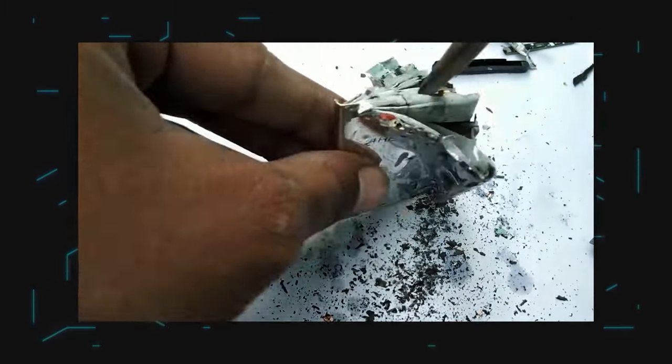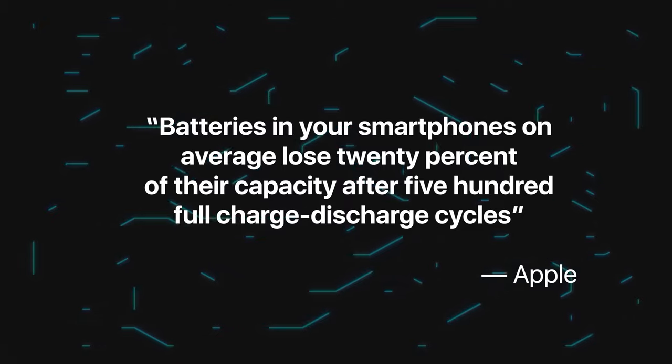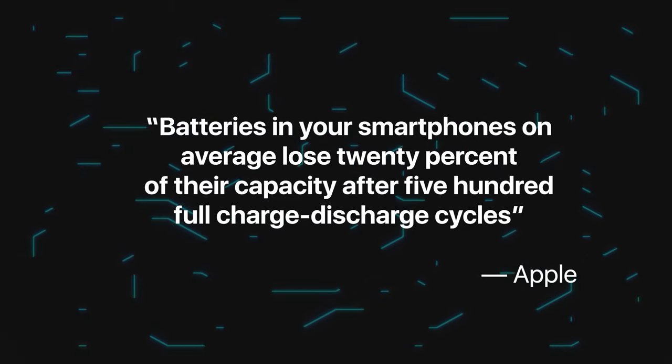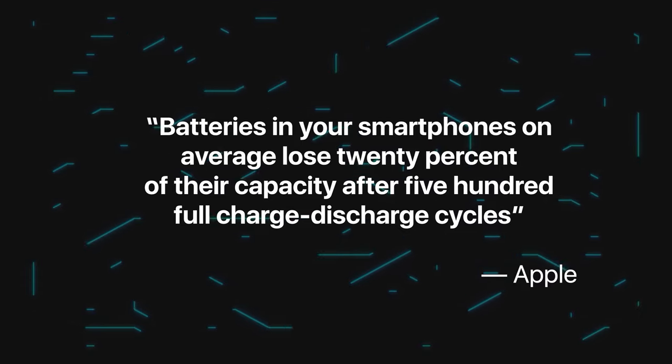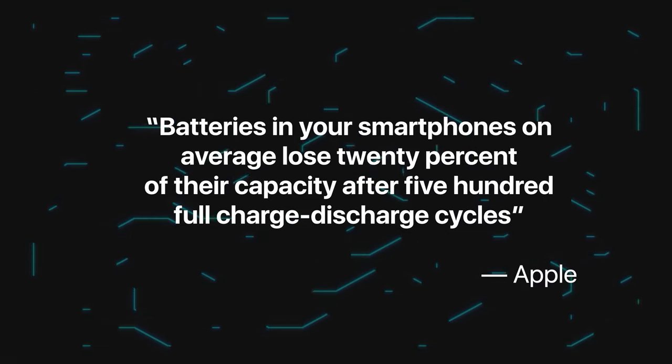The fact is that each charge-discharge cycle inevitably changes the internal structure of the battery at the physical level and spoils it. For example, batteries in modern smartphones lose 20% of their capacity on average after 500 full charge-discharge cycles. This is about one and a half to two years of work. Moreover, the process accelerates over time, so the next 20% of the battery will lose even faster.